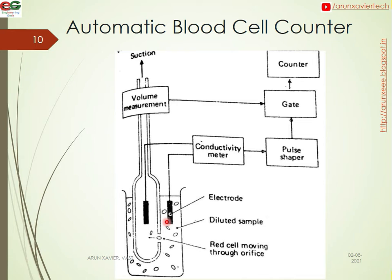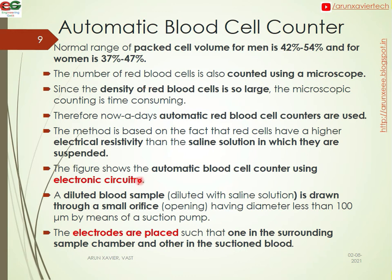We use a conductivity measure — specifically a resistivity change — to count blood cells automatically using two electrodes and a suction system. The diluted blood sample is drawn through a small orifice having a diameter of less than 100 micrometers by means of a suction pump.